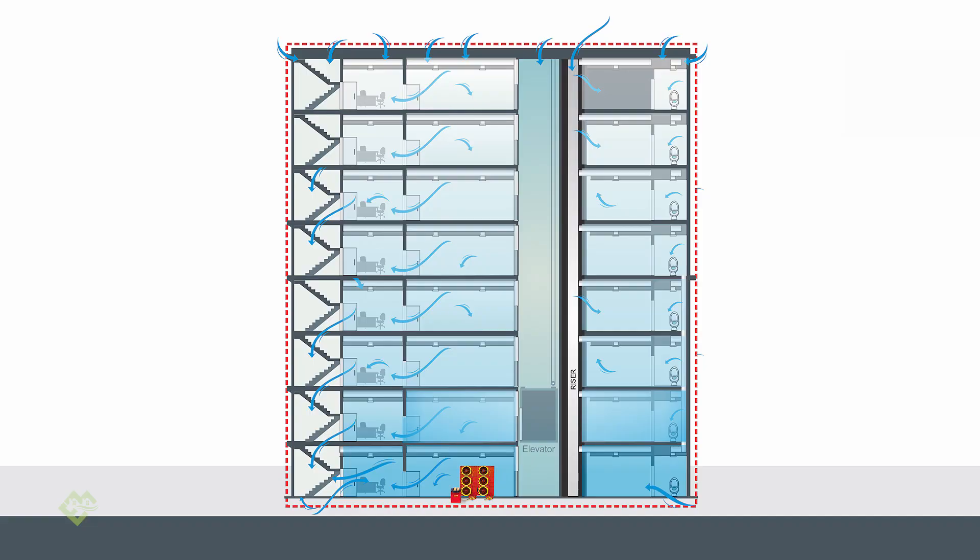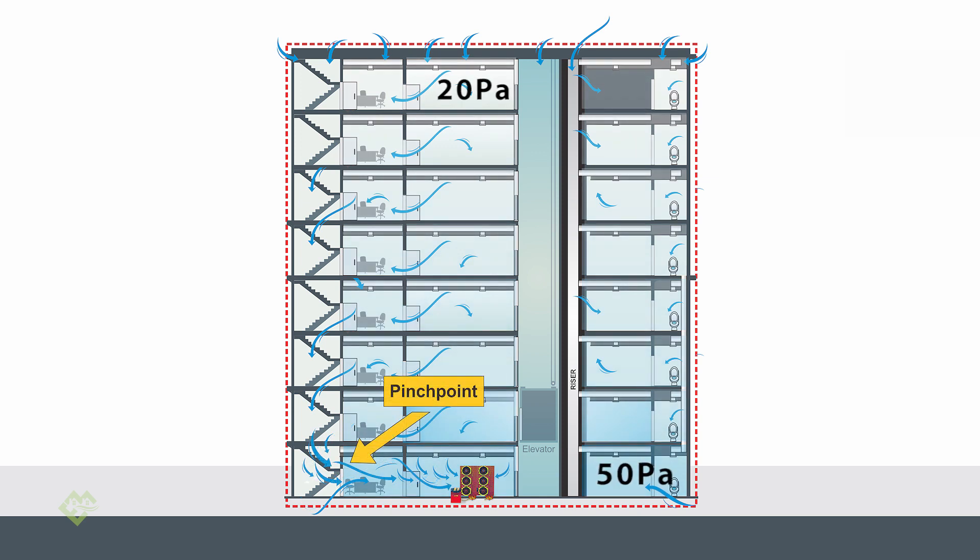For any buildings that are 20 metres cubed per hour per metre square, you're pretty much guaranteed to have pinch points. The leakier the building, the harder it is to test. To make the case simple, it's like filling a bucket with just one hole — you can use a garden hose to fill it up even with one hole leaking it out. But if you've got a sieve there, there's no way you can fill it.